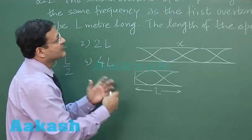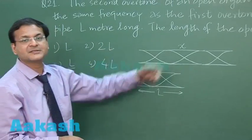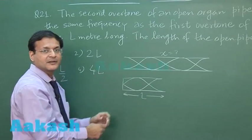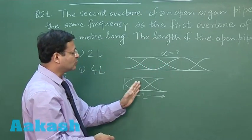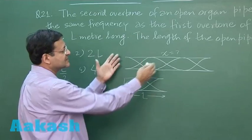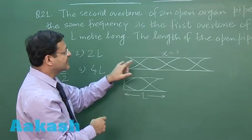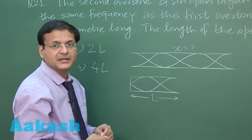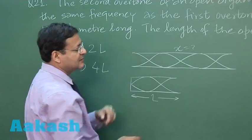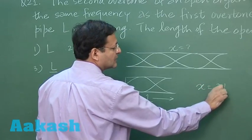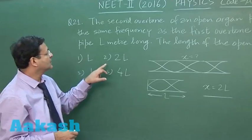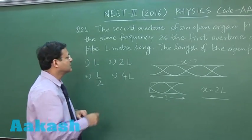Here you can see they are saying the length of the open pipe x value you are supposed to calculate. So count the number of quarter wavelengths. Here you have 1 quarter, 2 quarter, 3 quarter. But this length is accommodating 6 quarter lengths: 1, 2, 3, 4, 5, 6. So double the wavelength is being accommodated. So x will be having double length 2L. This is the answer you have to mark and I will be marking option 2.